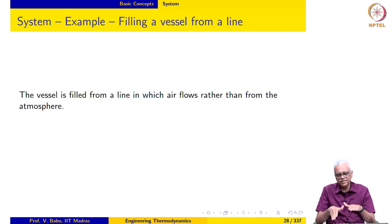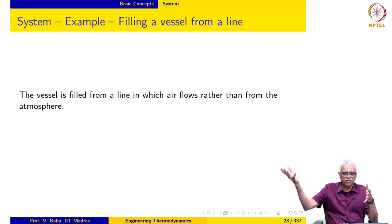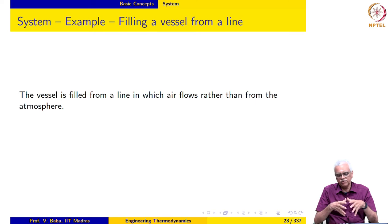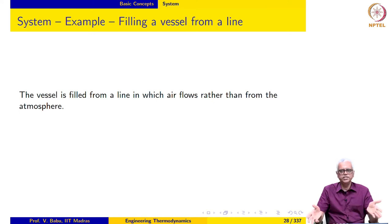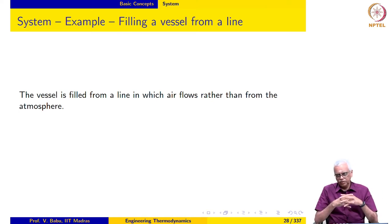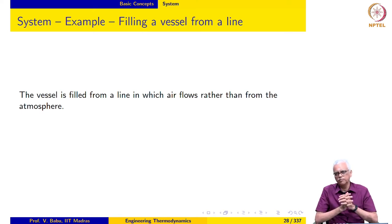The only difference between this and the previous example is that in the previous example, we allowed the vessel to be filled from the atmosphere. Here we are actually filling the vessel from a line. It could be a steam line, it could be a high-pressure airline, and the vessel may be initially evacuated or at a pressure less than the line pressure. We open the valve and allow a certain amount of air or steam to come in and fill the vessel, then we close the valve.